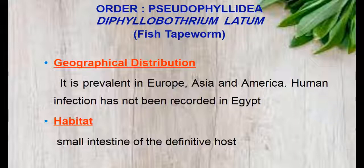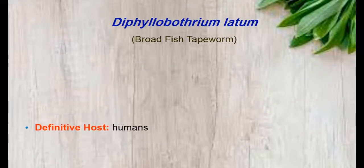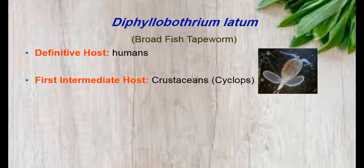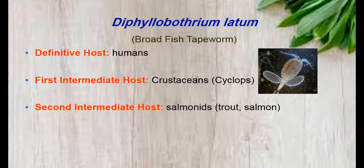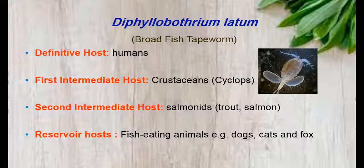The first example in order Pseudophyllidea is Diphyllobothrium latum, also called fish tapeworm. Its distribution is prevalent in Europe and America, and human infection has not been recorded in Egypt. Its habitat is in the small intestine of the definitive host, which is humans. The first intermediate host is crustaceans such as Cyclops, and the second intermediate host is salmon fish. The reservoir host is fish-eating animals such as dogs, cats, and fox.